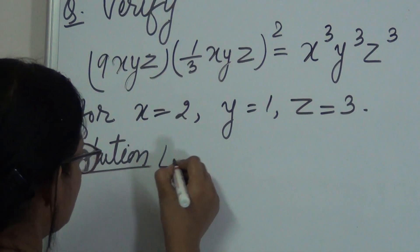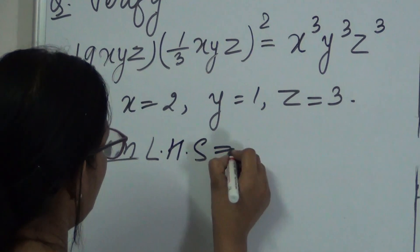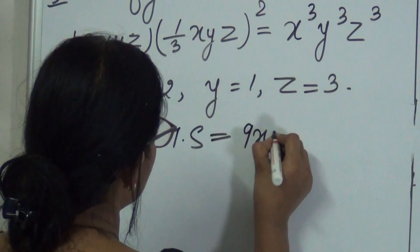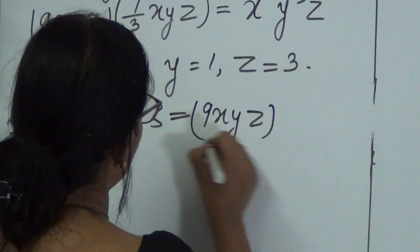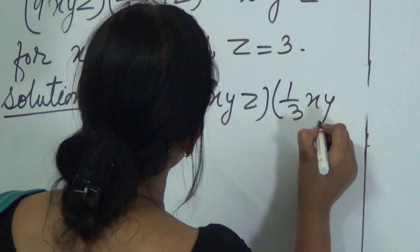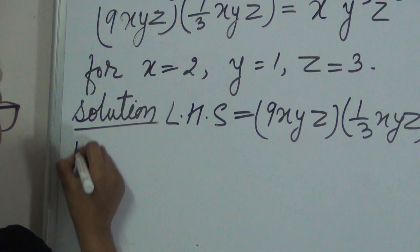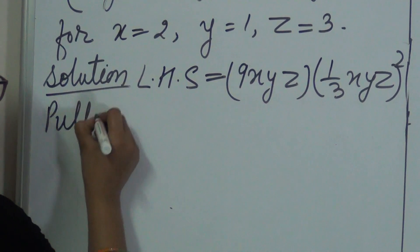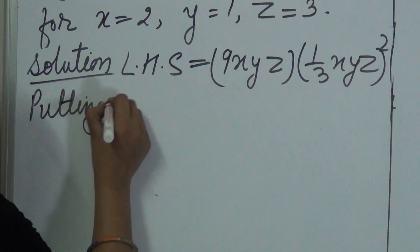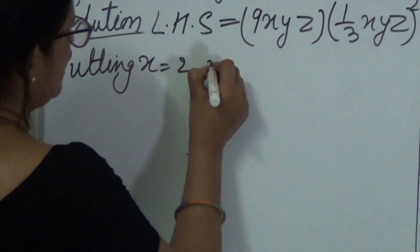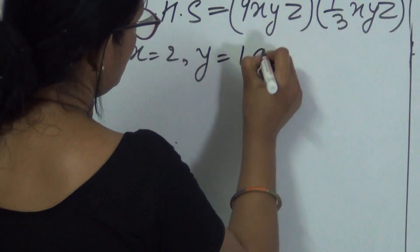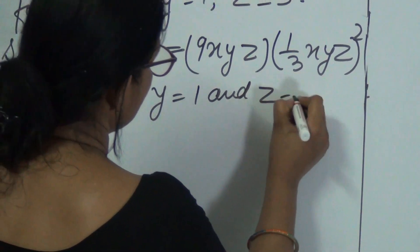So here LHS is equal to 9XYZ into 1 upon 3XYZ whole square. We will put the values of X, Y and Z, putting X is equal to 2, Y is equal to 1 and Z is equal to 3.